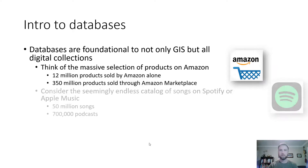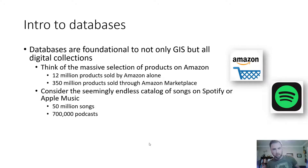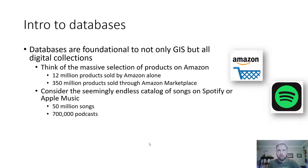Consider also the seemingly endless catalog of songs on Spotify or Apple Music — 50 million songs, and Spotify alone has 700,000 podcasts. Music has to be cataloged and stored by genre, decade, style, artist, album, and playlist — seemingly endless ways of organizing music. Spotify and other music providers all rely on databases to organize their catalogs.